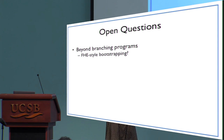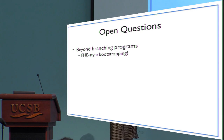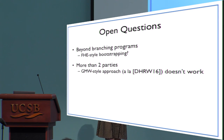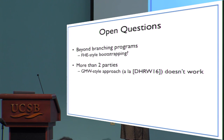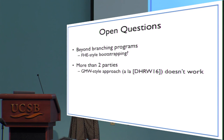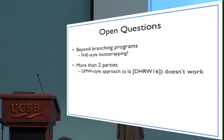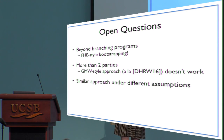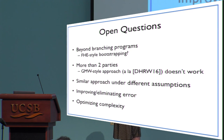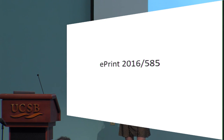Some open questions in this fascinating area: beyond branching programs, is there some way of supporting multiplications of two memory values directly, or doing some FHE-style bootstrapping procedure? Our construction is really limited to two parties because of the share conversion procedure; are there ways to extend beyond two parties? GMW-style techniques from a related session don't quite work here. Can you do a similar approach under different assumptions — factoring or RSA seem very in line with this. And of course, optimizing complexity and improving the error. As of yesterday, we have a complete full version of the paper up on ePrint — I invite you to take a look. Thank you.